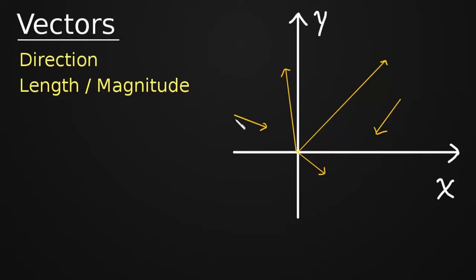This is also a vector. It's pointing in a certain direction, and it has a certain length. Okay? That's great. Now let's look at a specific example.